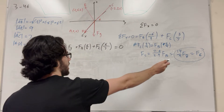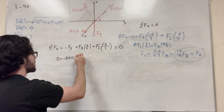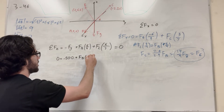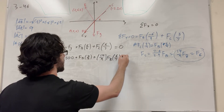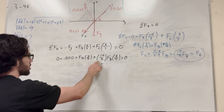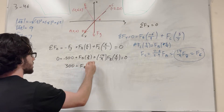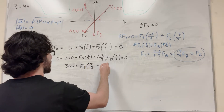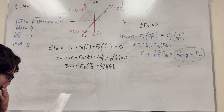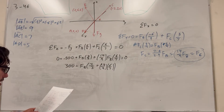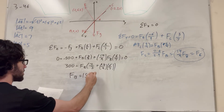Substituting back into the z-direction equation: 300 equals force B times two-thirds plus force C times six over seven. Plugging in force C equals (14/9) force B: 300 equals force B times (two-thirds plus 14 over nine times six over seven). Factoring out force B and simplifying the bracket gives force B equals 150 pounds. We figured out one of them.